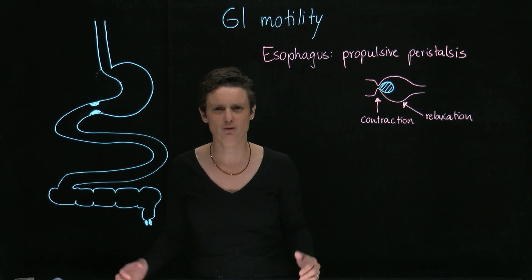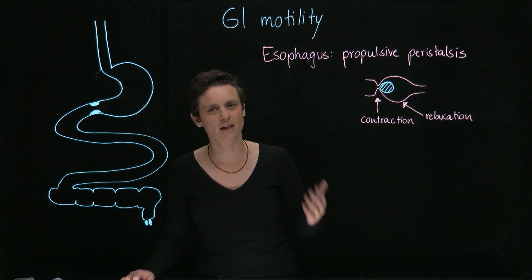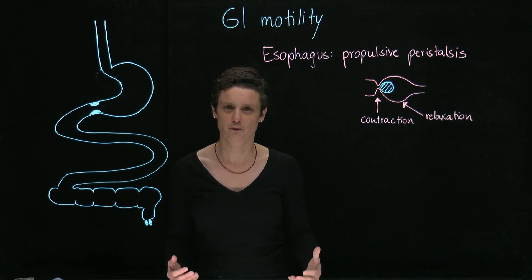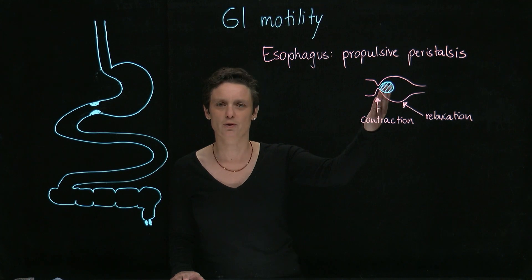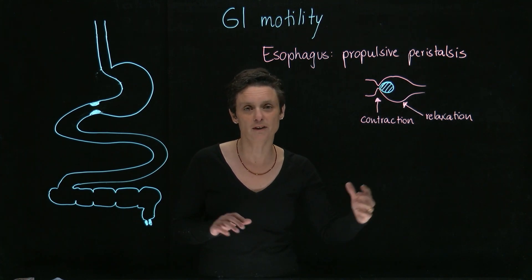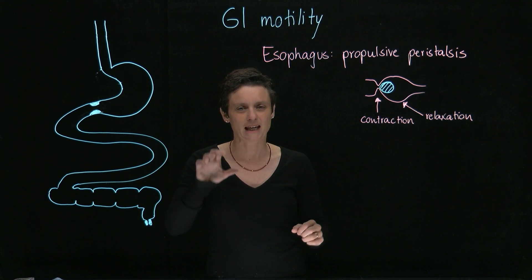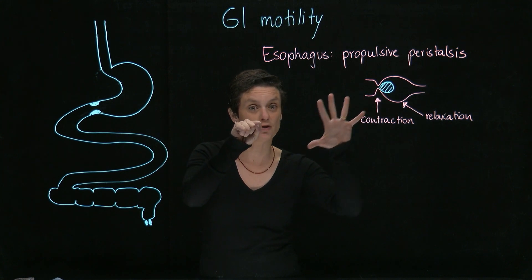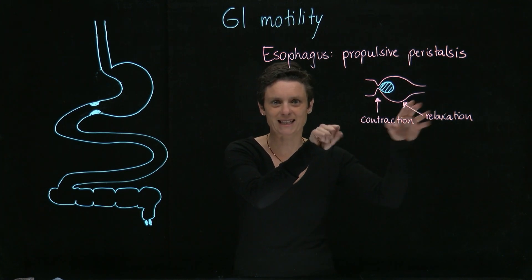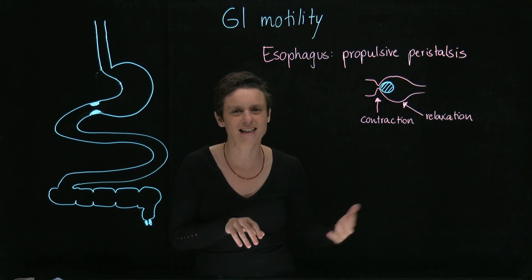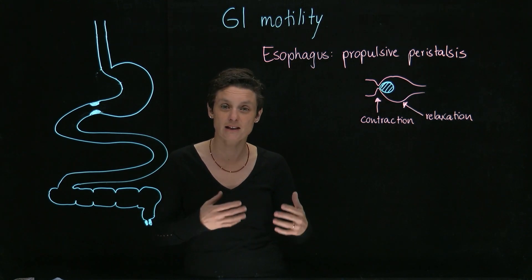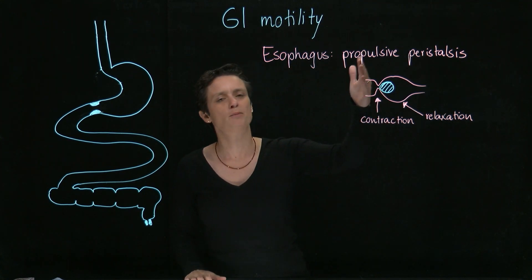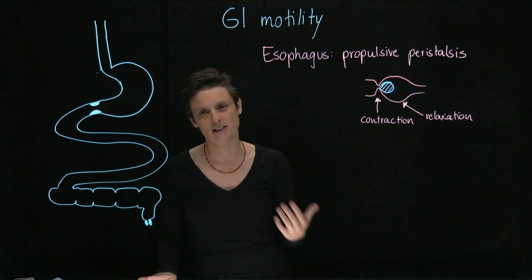Let's start with the esophagus. The esophagus is really just good for moving things down to the stomach. To move a food bolus forward, what exactly happens is that you need to contract below the food bolus and relax above — contract below, relax above — and that's how you move things forward. This GI motility pattern of relaxing above and contracting below is called propulsive peristalsis, and that's what you see in the esophagus.